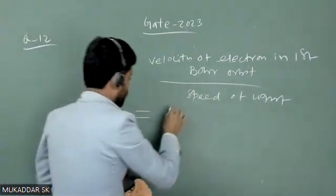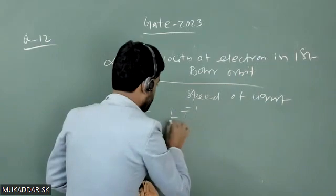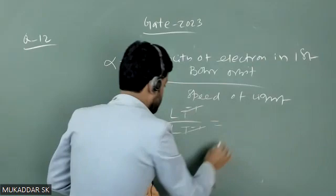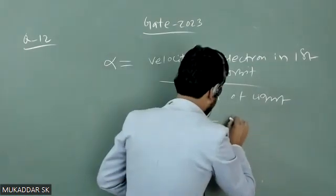That velocity is L T to the power minus one, speed of light is also L T to the power minus one. So basically fine structure constant is dimensionless.